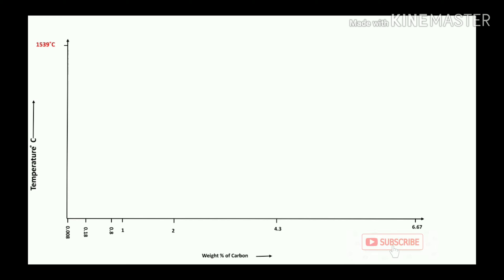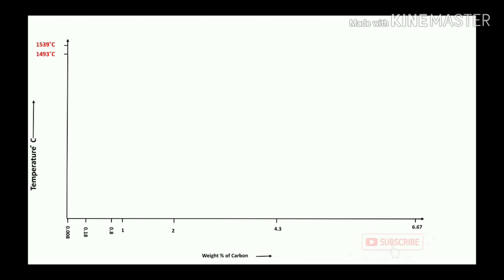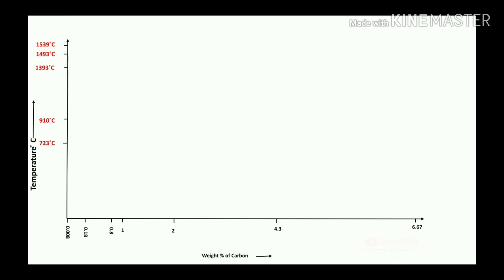The y-axis represents temperature in degrees centigrade. The key temperature values are: 1539°C, 1493°C, 1393°C, 910°C, 723°C, and 210°C.